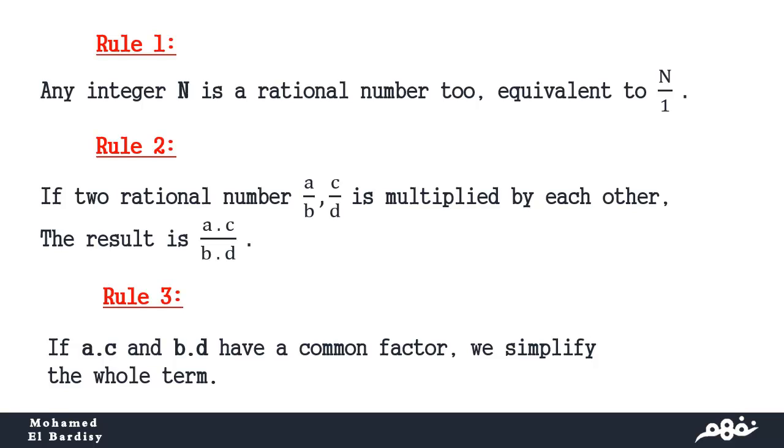Rule number 1 says that any integer number can be a rational number. We can consider it a rational number. You know that 1 is the multiplication identity element: n times 1 equals n. And n over 1 also equals n. So this is just a rephrase; it doesn't affect the value.